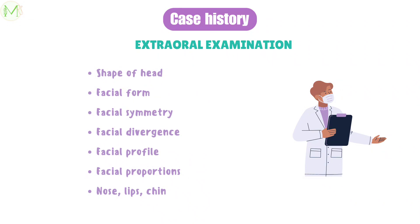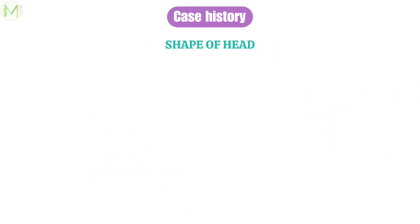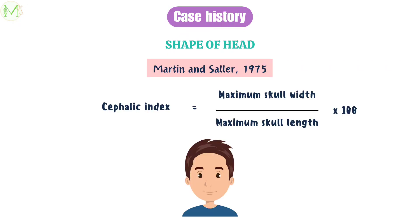In extraoral examination, we need to assess shape of head, facial form, facial symmetry, facial divergence, facial profile, facial proportions, and we also need to examine nose, lips and chin. Shape of head is determined by cephalic index. Cephalic index was given by Martin and Salyer in 1975. It is the ratio of maximum skull width to maximum skull length.